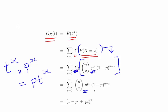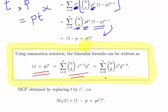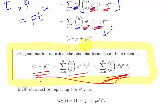And we have 1 minus p to the power of n minus x, along with the binomial coefficient. We then use the binomial theorem to re-express that sum. So that's the binomial formula — this is how we go from pt to the power of x times 1 minus p to the power of n minus x, using that part of the formula to get to the final result.